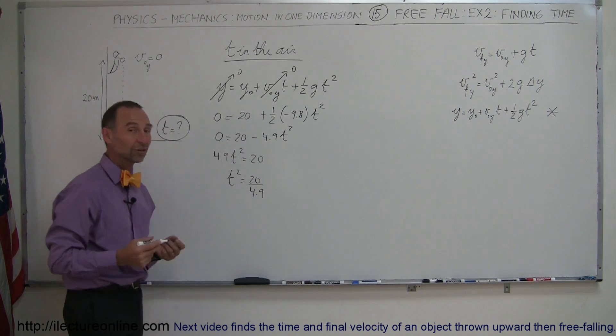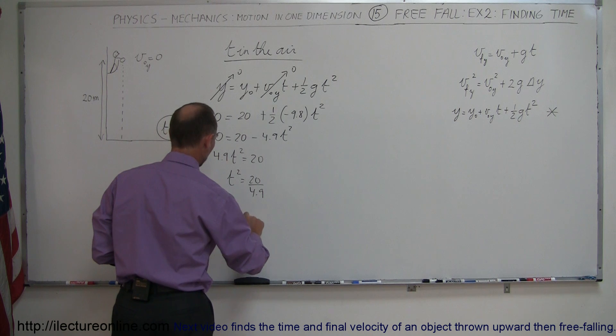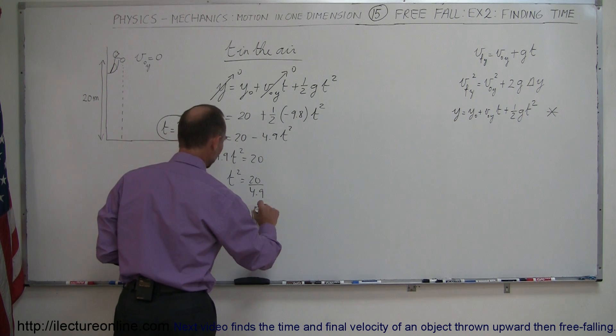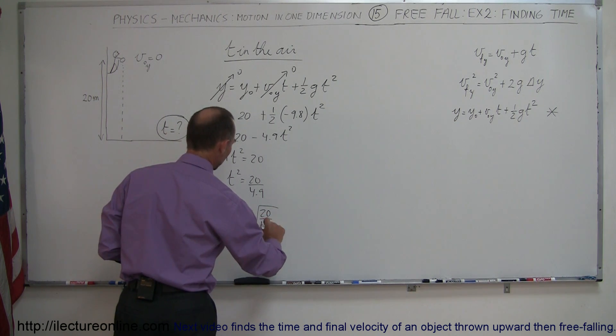And now we have to, of course, take the square root. And so t is equal to plus or minus the square root of 20 over 4.9.